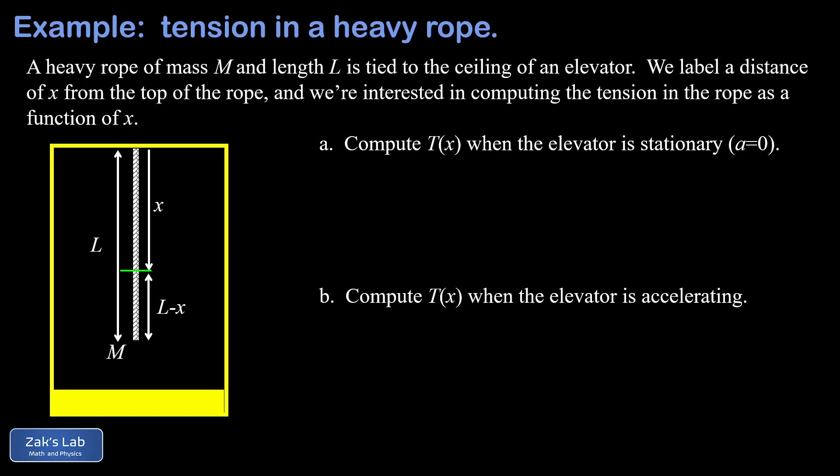So the mass of that little segment can be computed in a couple equivalent ways but the most intuitive approach is to just ask what fraction of the rope lies below the cut line. So that fraction is going to be l minus x, that's the length below the cut line, divided by the total length l.